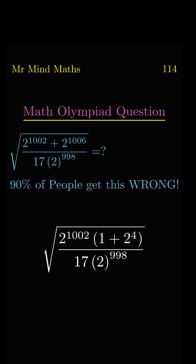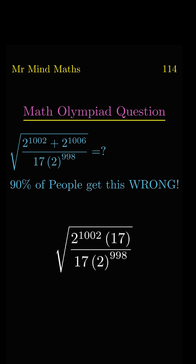Now we know that 2 power 4 is equal to 16. Now we will add 1 plus 16, which equals 17. Now 17 will cancel with each other.